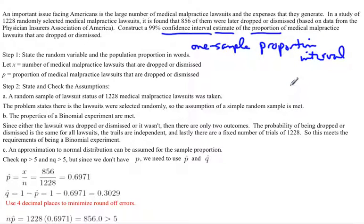Alright, so now that we know that, we can follow the steps of a confidence interval. The first thing of every test, whether it's a hypothesis test or a confidence interval, is to state the random variable and the population parameter in words. In this case, it's proportion. We do know that the parameter is proportion of medical malpractice lawsuits that are dropped or dismissed. The symbol for proportion is little p. Proportions are made by taking a count over a total. So my random variable is actually the number of medical malpractice lawsuits that are dropped or dismissed.